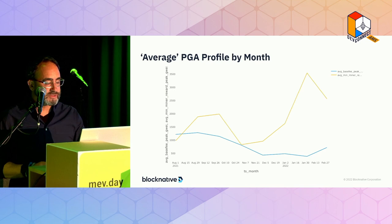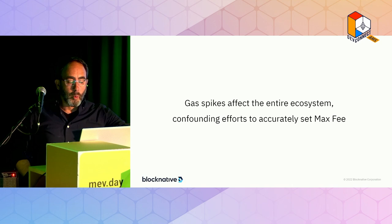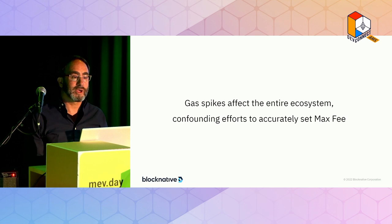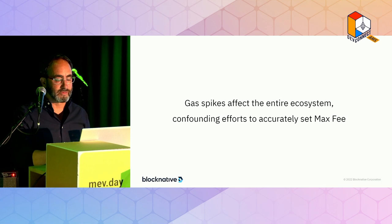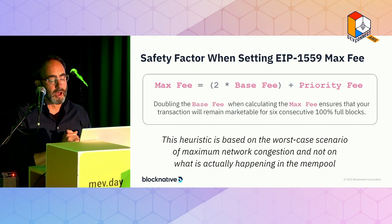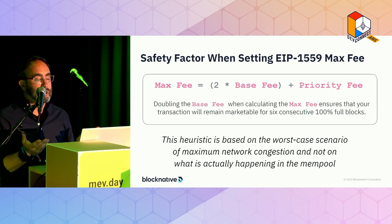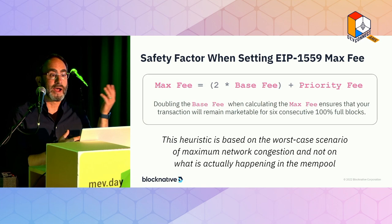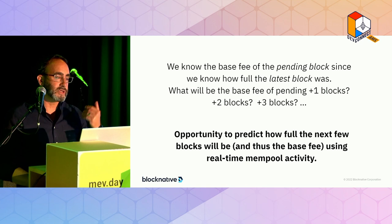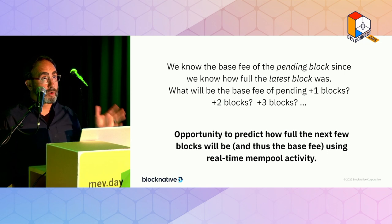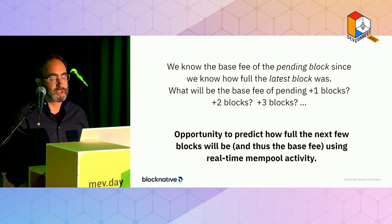This creates all sorts of interesting problems. When you have these massive surges, you've got to be really careful about your max fee — set in such a way to make sure you can be included in a coming block. As these spikes continue to happen more regularly, you've got to be a lot more careful. The typical max fee algorithm is pretty simple: double the base fee and add your priority fee. The challenge is it sets very high numbers that scare users. So we've been working on predicting one, two, three, four, and now five blocks out where the base fee is going to be, for more accurate max fee calculations.